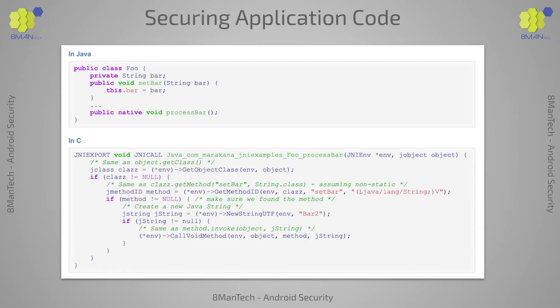Obfuscation can also break certain APIs, most notably those that use reflection, and therefore rely on class names remaining unchanged. In this example, setbar is a method in Java that is being invoked in native C code using JNI. As you can see, get method ID, a JNI helper function, requires the name of the method as a string. If we would have renamed setbar, the C call would have to know somehow about the new name.